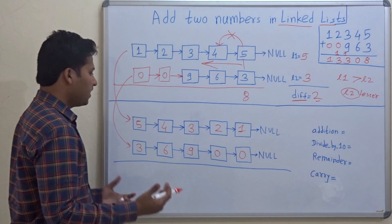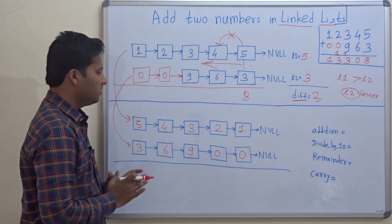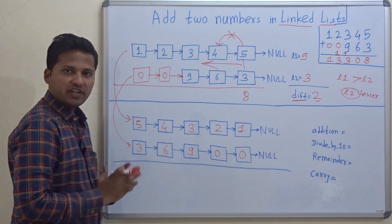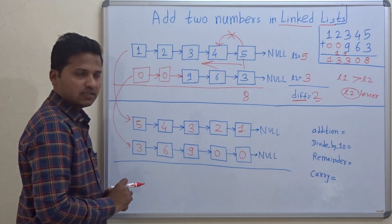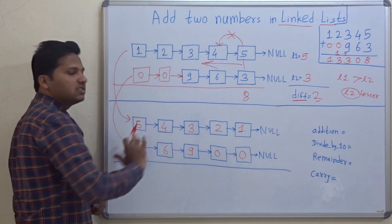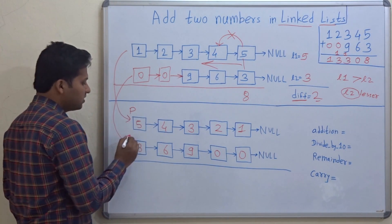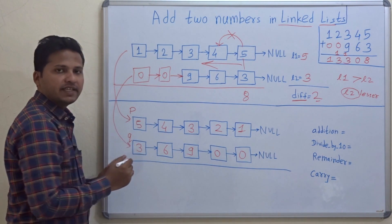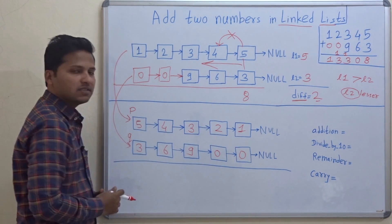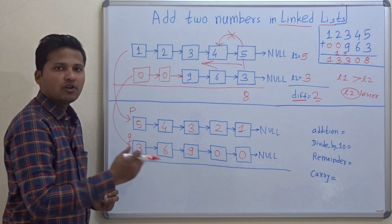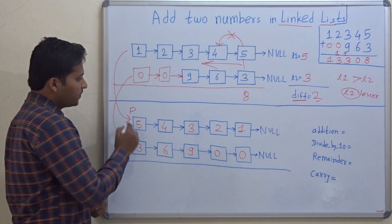Now we are ready to add the two linked lists. We have made them in an appropriate form to add. For adding these two linked lists, we have to traverse them. We will have a pointer p pointing to the first linked list and pointer q pointing to the second linked list. These pointers will travel through the linked lists in a while loop. So in a program we use this while loop for traversing the linked lists.